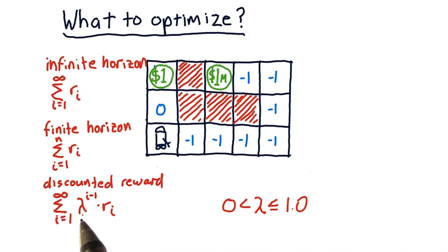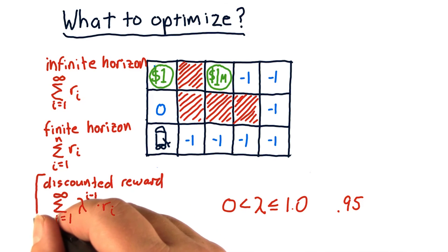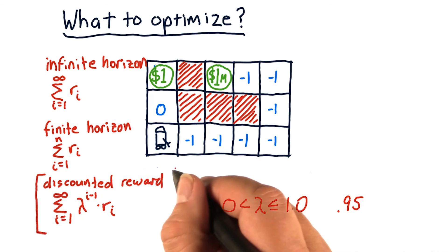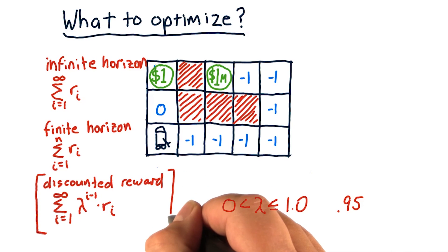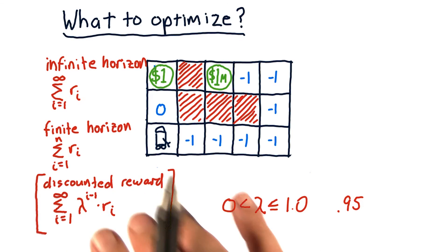So if, say, gamma were 0.95, it means each step in the future is worth about 5% less than the immediate reward if we got it right away. This is the method that we use in Q learning. One reason is that the math turns out to be very handy, and it provides nice convergent properties.